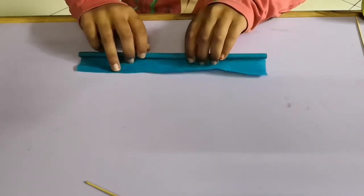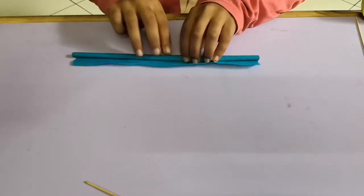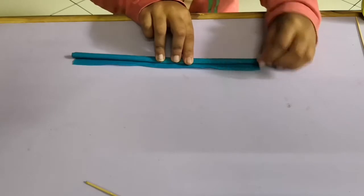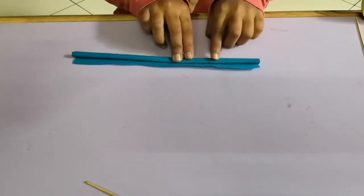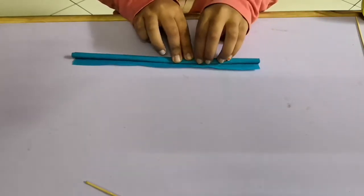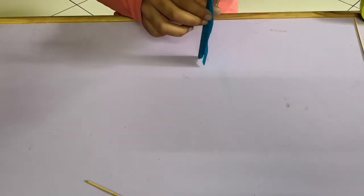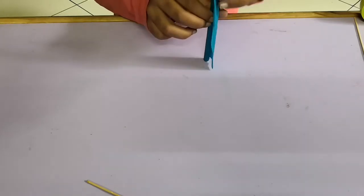You can roll it till there is approximately half an inch gap between the roll and the end of the paper. Then you can loosen the roll a little and take the skewer stick out.